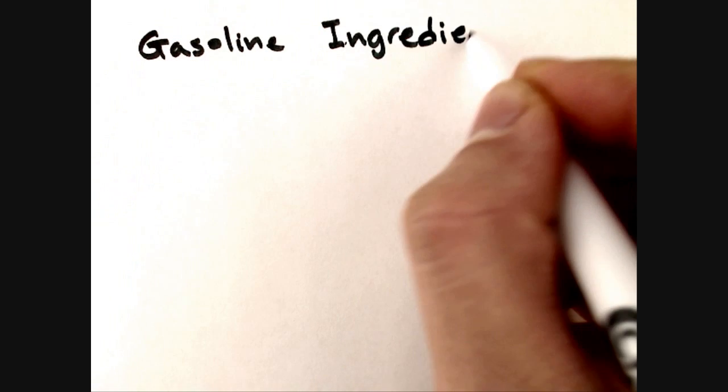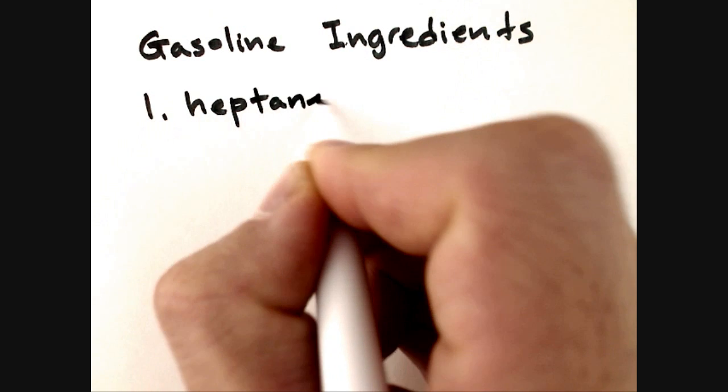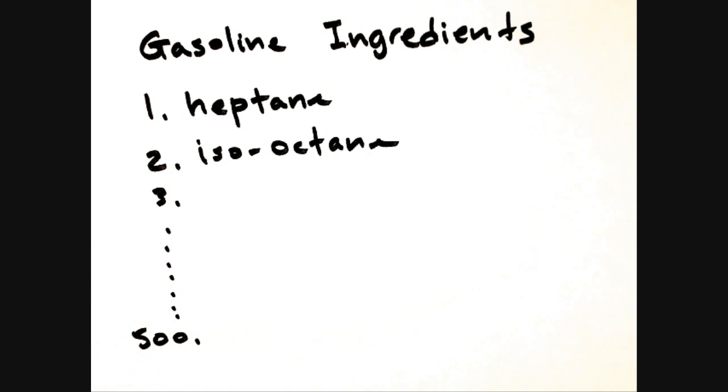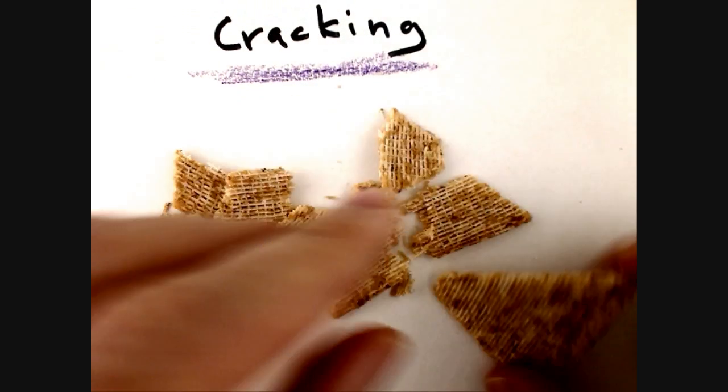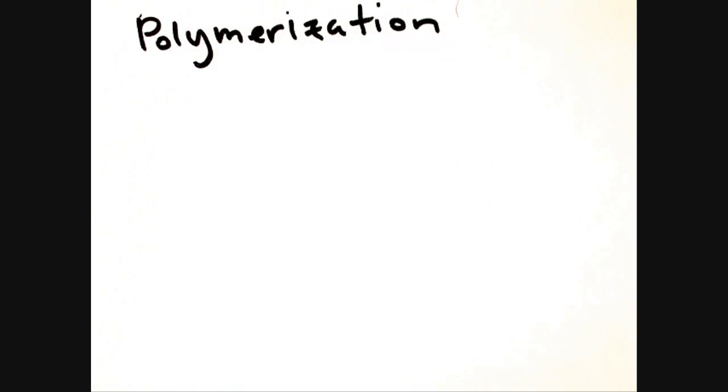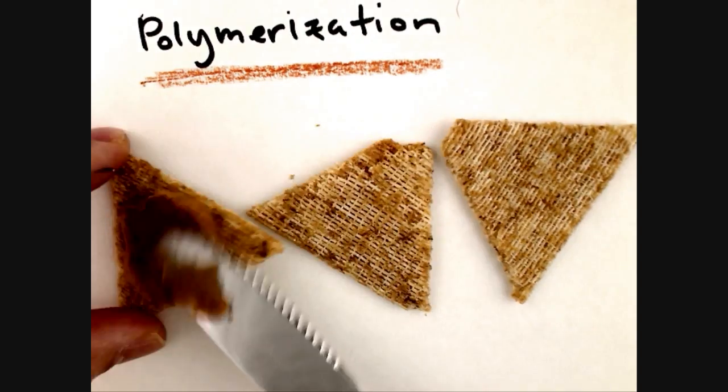Gasoline contains over 500 types of hydrocarbons, including heptane and isooctane. These hydrocarbons are then further processed through cracking and polymerization. Cracking is the process of breaking large hydrocarbons into smaller pieces, and polymerization is the process of combining smaller hydrocarbons into a bigger piece.